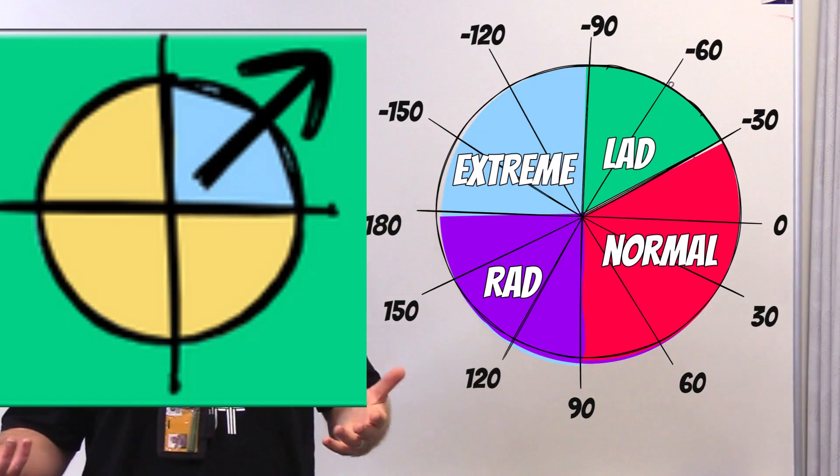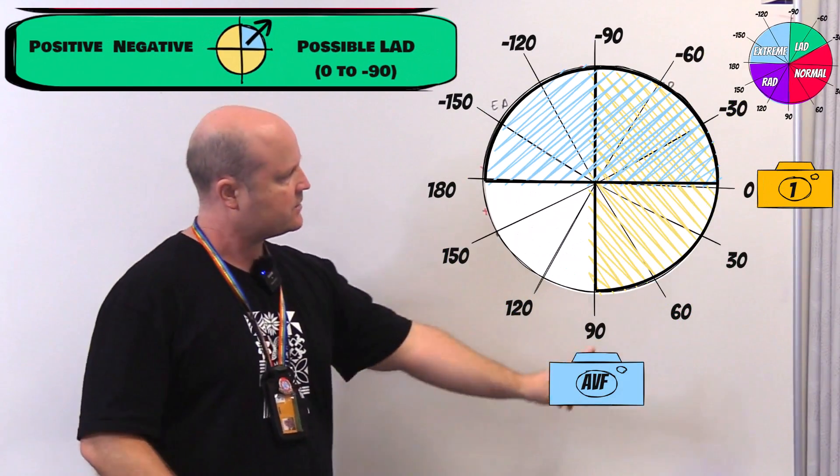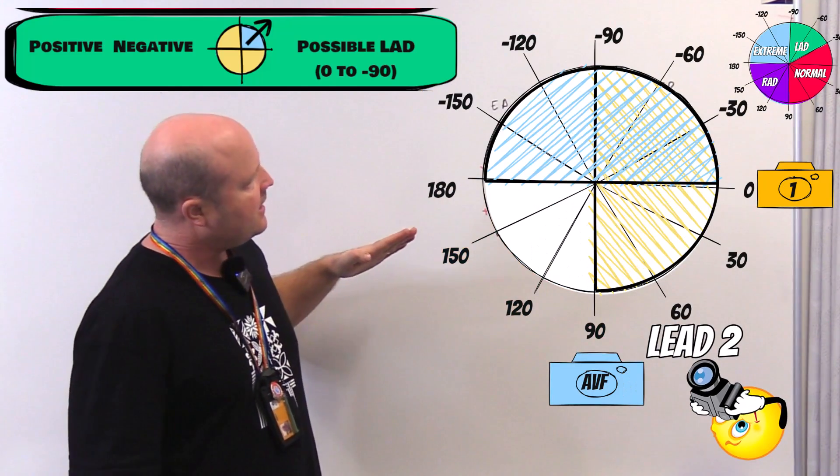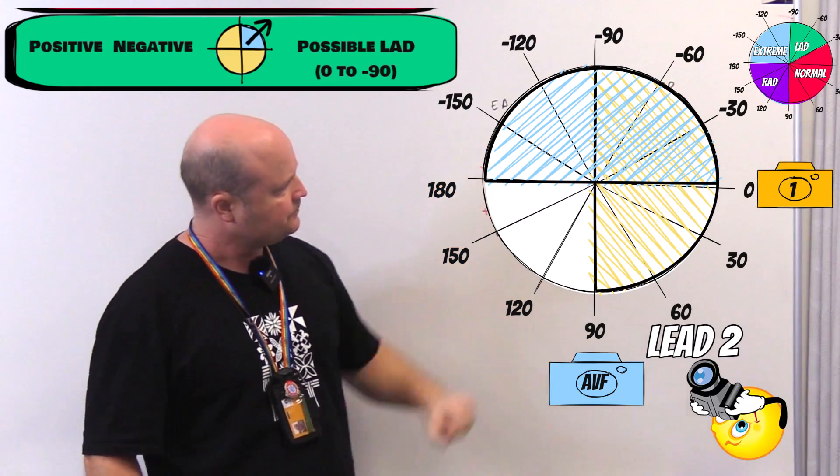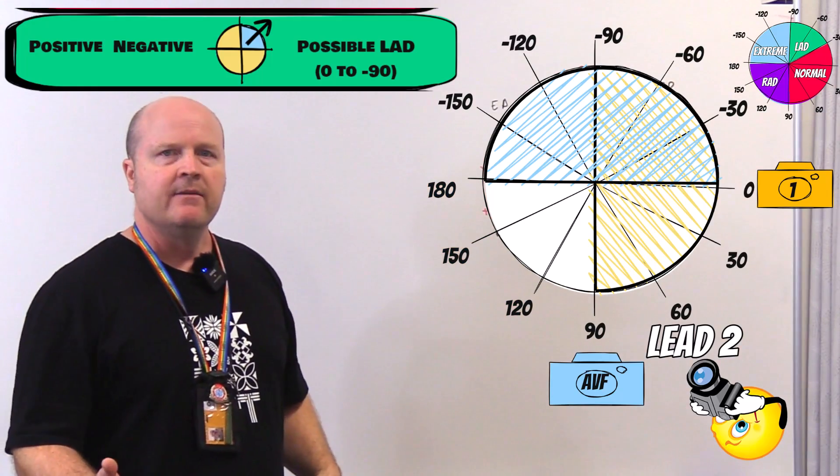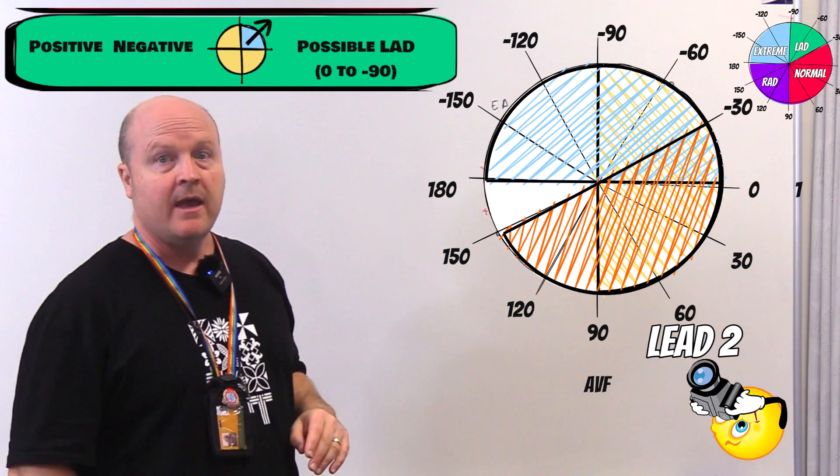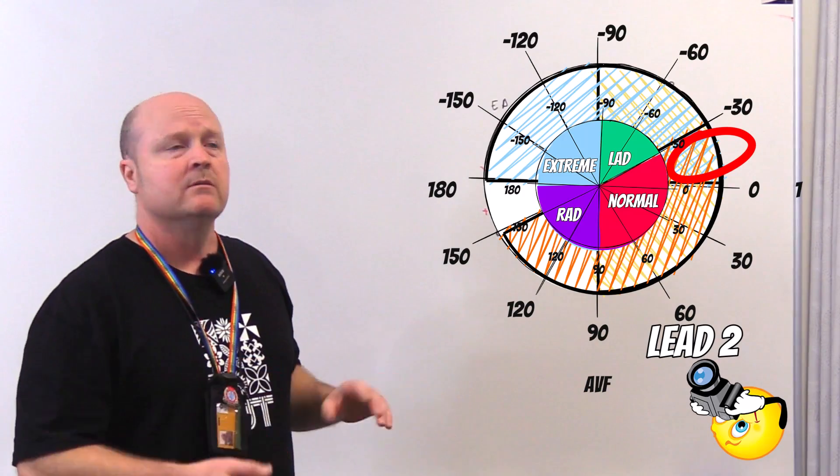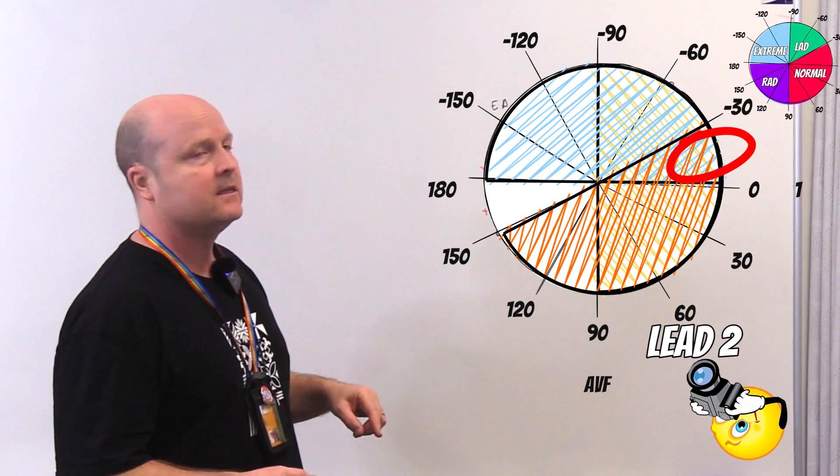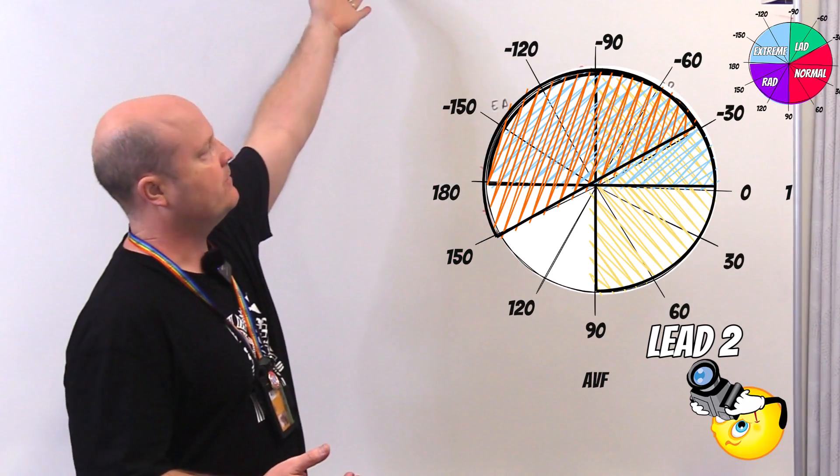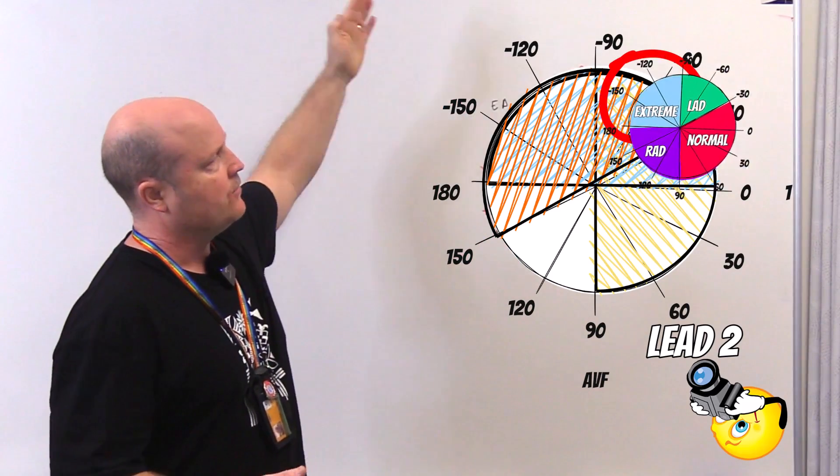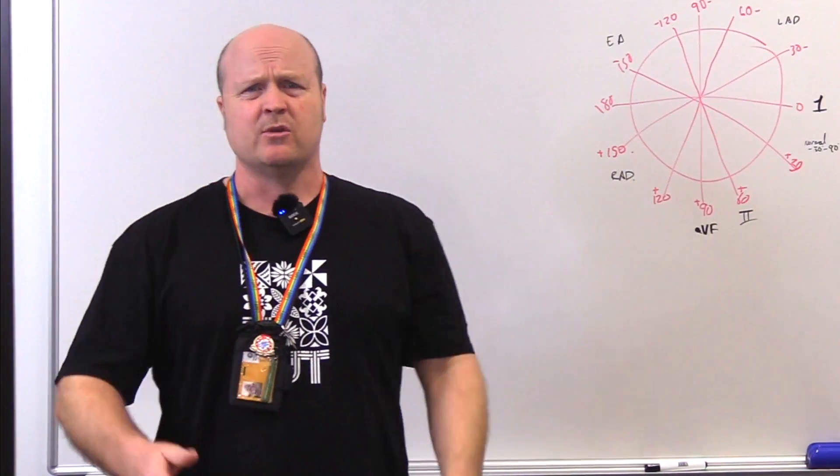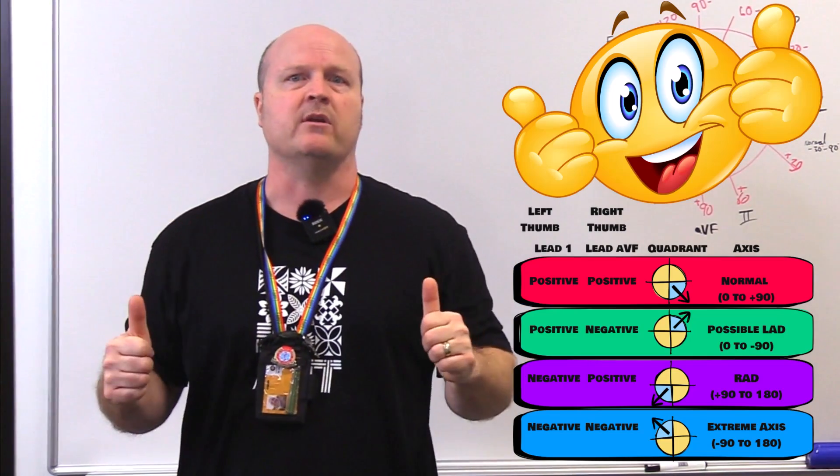So what we can do to confirm is we can look at lead two, which sits at 60 degrees, which is right in that middle. So therefore, if lead two is positive, then we can shade that bottom half of the diagram, and that's going to include the negative 30, so now we know it's normal. If lead two is negative, then we're looking at the other half of the diagram. So therefore, we do have left axis deviation. But just doing your thumbs up, thumbs down is good enough in the pre-hospital series.